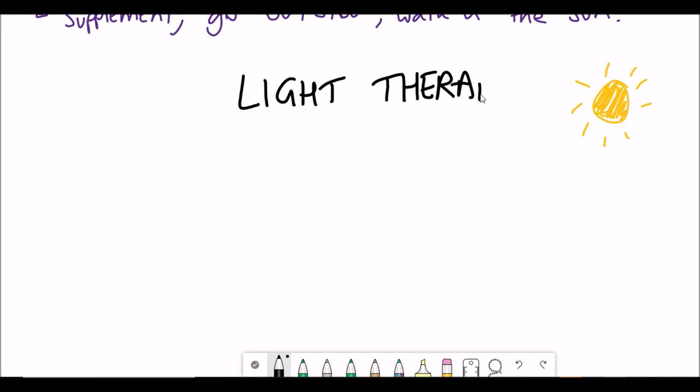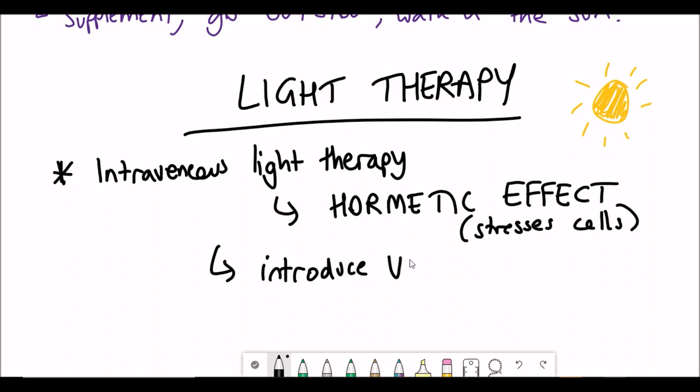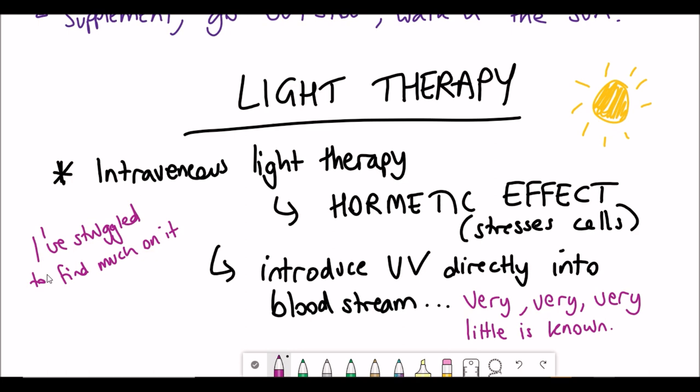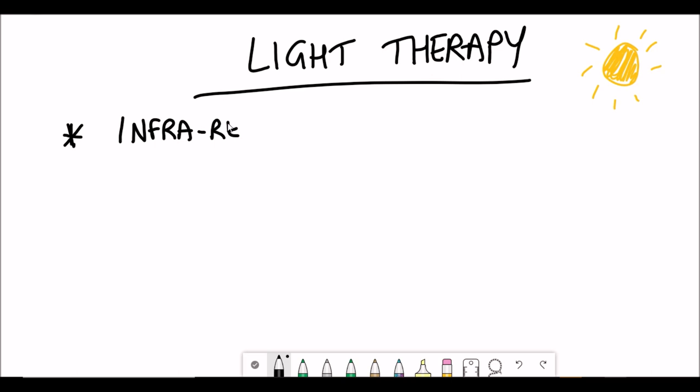I like this quote by Dave: blue light is the high fructose corn syrup of lighting. It's true - the availability of blue light late at night is what disrupts our sleep patterns, and sleep is very important for becoming superhuman. But light isn't only a bad thing. He discusses something I hadn't heard of before, which is intravenous light therapy, which basically stresses cells and has a hormetic effect to stimulate the stress preventing pathways. This is by introducing UV light directly into the bloodstream.